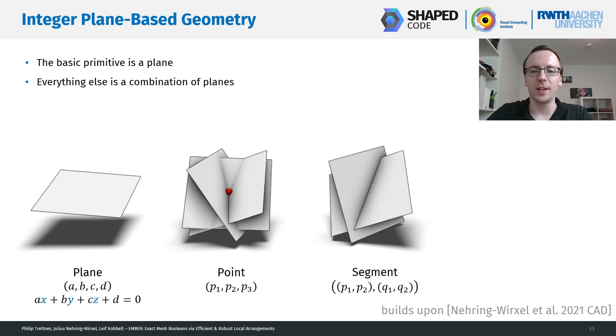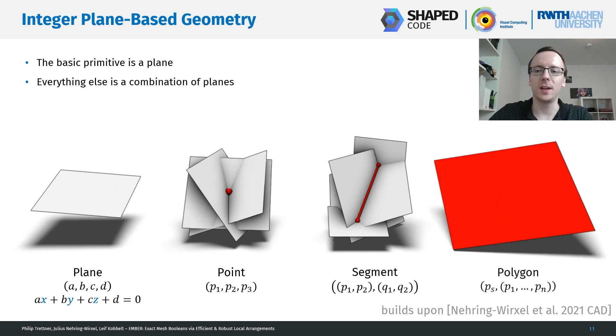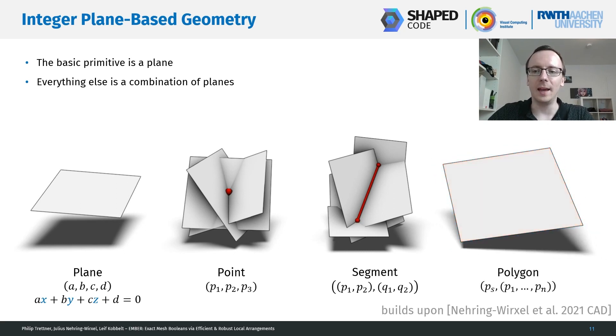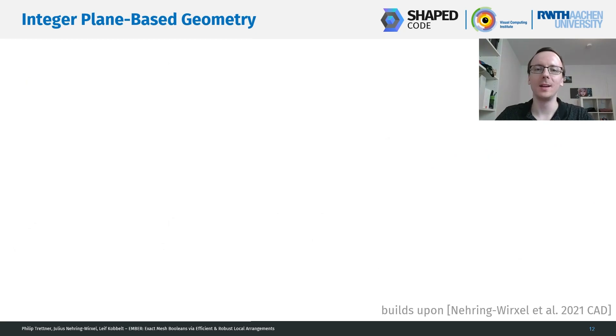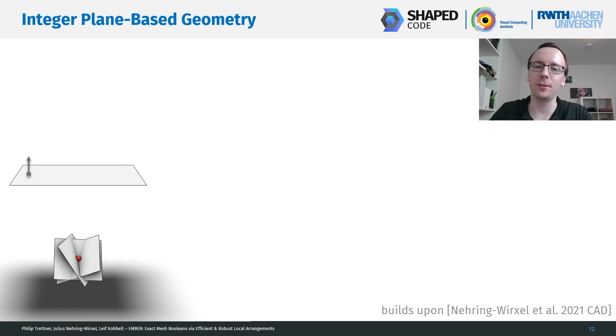If we take the intersection of two planes, we get an infinite line. And if we add two additional planes, we have a segment. If we start from an infinite plane and add a few bordering planes, we can get a representation of polygons. The only actual kind of computation that we do with these planes is, given three planes that implicitly define a point and a fourth plane, we ask on which side of this fourth plane is the point.